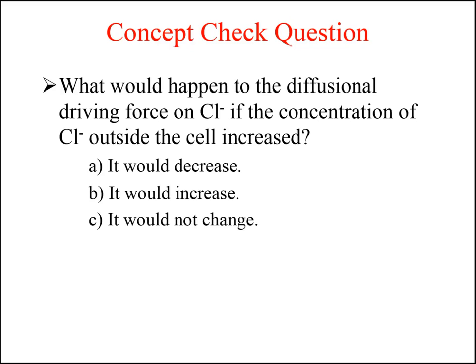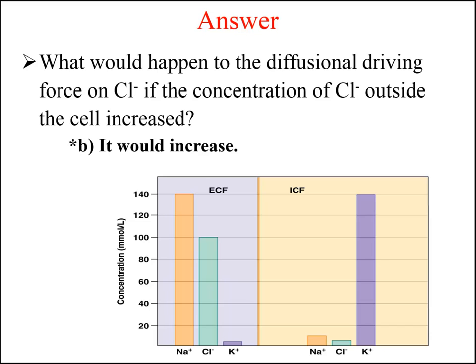Concept check question: What would happen to the diffusional driving force on chloride if the concentration of chloride outside the cell increased? Would it decrease, increase, or not change? The answer is that the diffusional driving force on chloride would increase. Recall that chloride is more concentrated in the extracellular fluid than in the intracellular fluid. So if we increase the concentration of chloride outside the cell, there'll be an even greater difference between the concentration in the extracellular fluid and the intracellular fluid, and therefore we would increase the diffusional driving force on chloride.